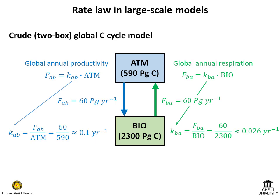Specifically, using the rate laws presented earlier, the rate constant for the global productivity is about 0.1 per year, whereas the rate constant for the global respiration is about 0.026 per year.